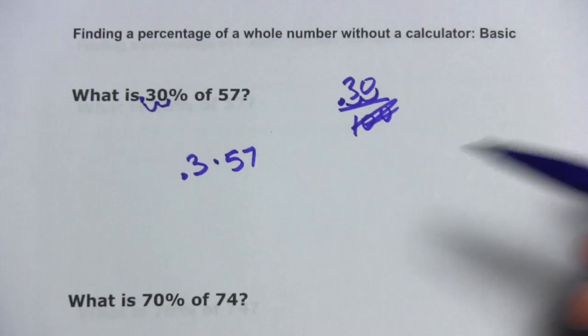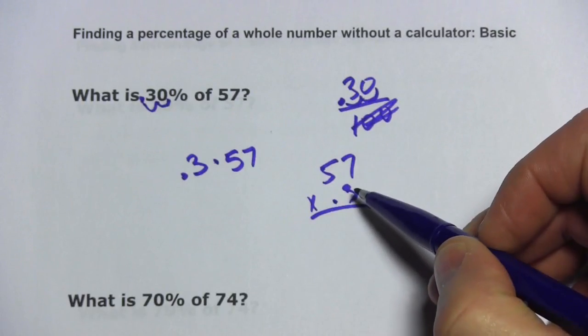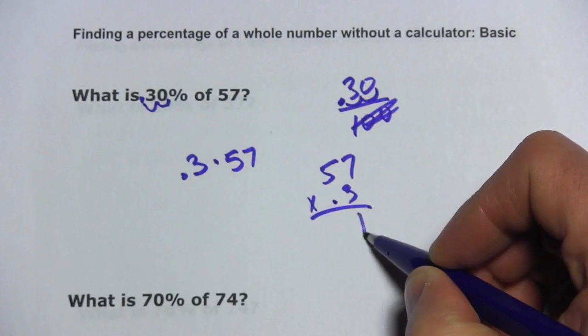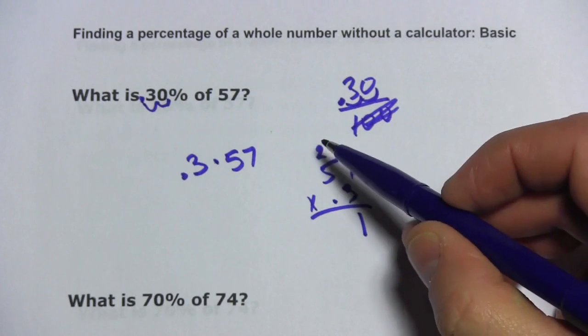We're supposed to do this without a calculator, so you can set it up like a multiplication problem here. And we do 3 times 7 is 21. I'll put the 1 down here, the 2 up here. 3 times 5 is 15, 16, 17.